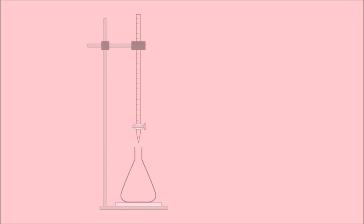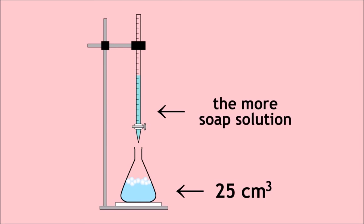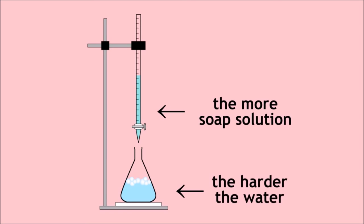To compare the hardness of different water samples, you can take a fixed volume — say 25 cc's of the hard water — and run soap solution in from a burette bit by bit, shaking each time until the soap lathers, meaning you'll see bubbles on the surface. The more soap solution you have to use, the harder the water will be.